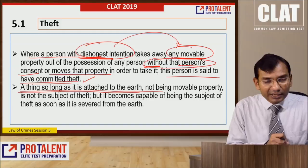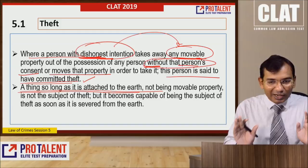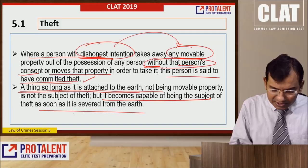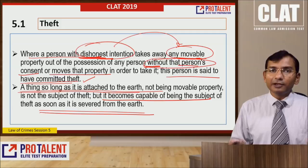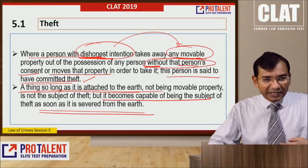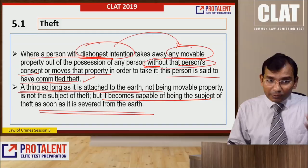As long as something is attached to the earth, theft cannot happen there — some other crime may occur, but not theft. However, it becomes capable of being subject of theft as soon as it is severed from the earth. For example, if a tree is cut down, it automatically becomes movable property. This is how theft works — dishonest intention, movable property, and without the person's consent.